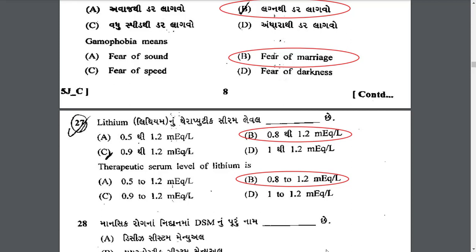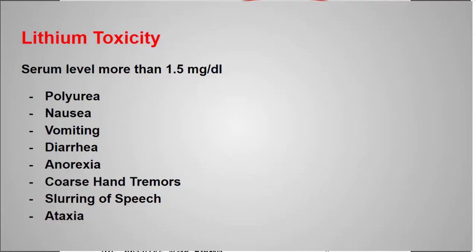Therapeutic serum level of lithium is 0.8 to 1.2 milliequivalents per liter. If the level rises above 1.5 milliequivalents per liter, lithium toxicity occurs. Signs and symptoms of lithium toxicity include polyuria, nausea, vomiting, diarrhea, anorexia, coarse hand tremor, slurring of speech, and ataxia.